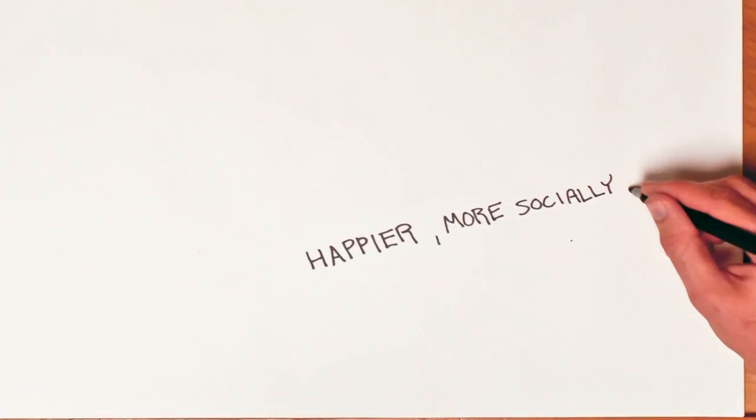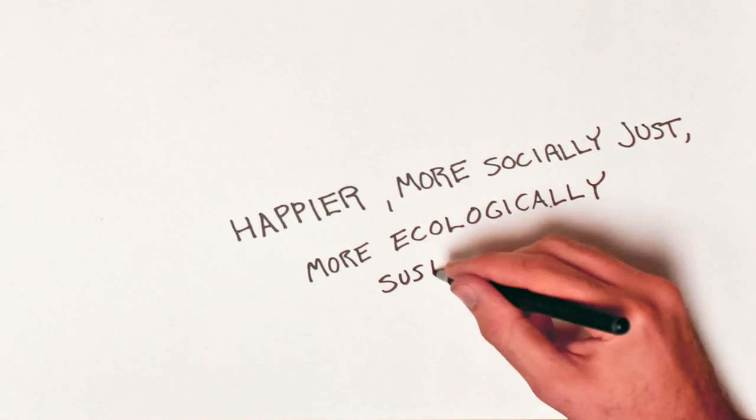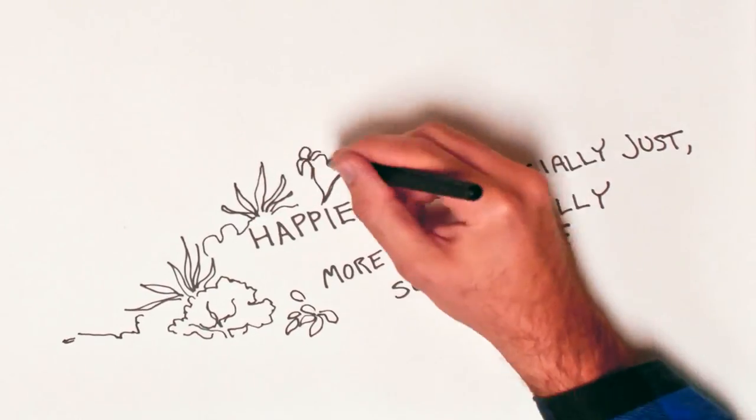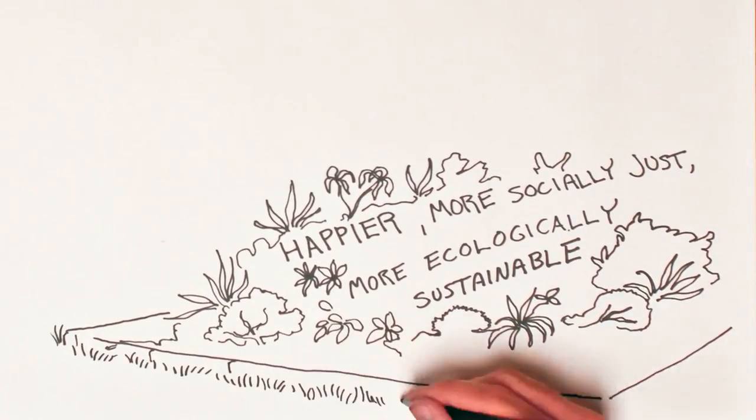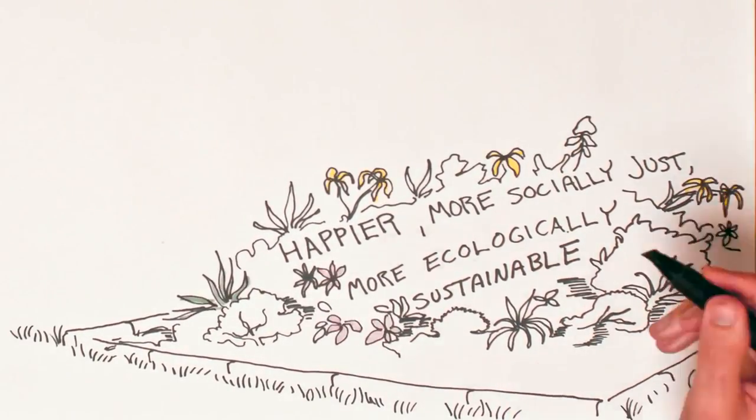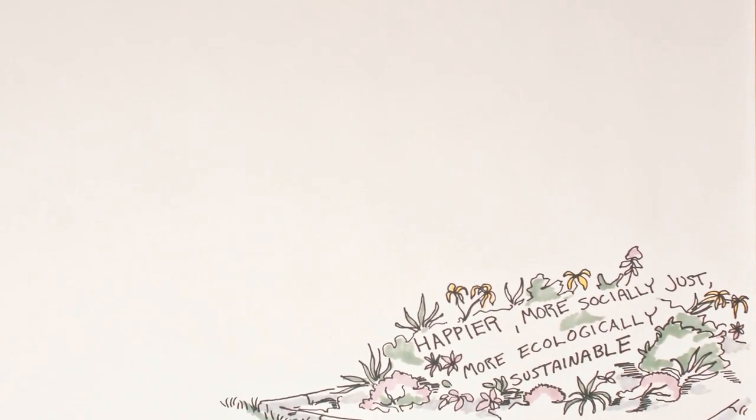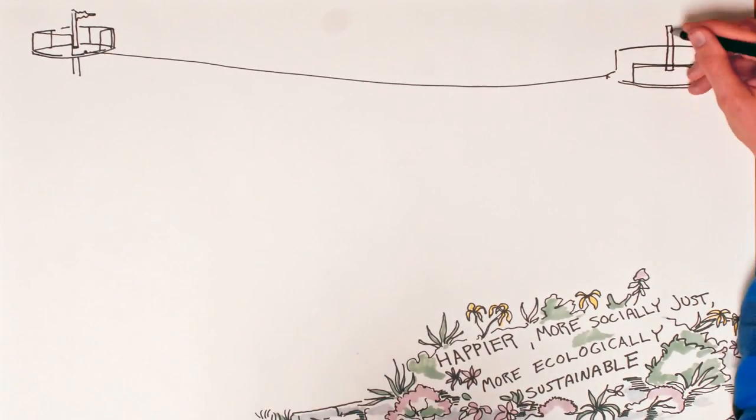Clearly, if we hope to have a happier, more socially just, and more ecologically sustainable world, then we need to develop ways to diminish the power of materialistic values in our personal lives and in society. Two basic principles for change can help frame the way forward.